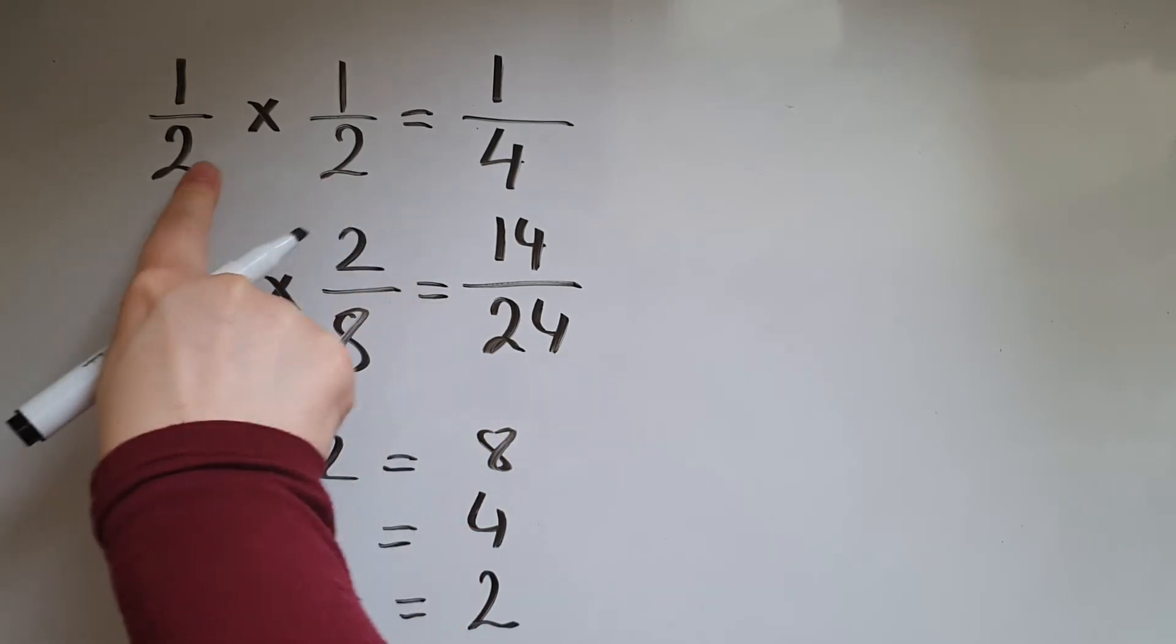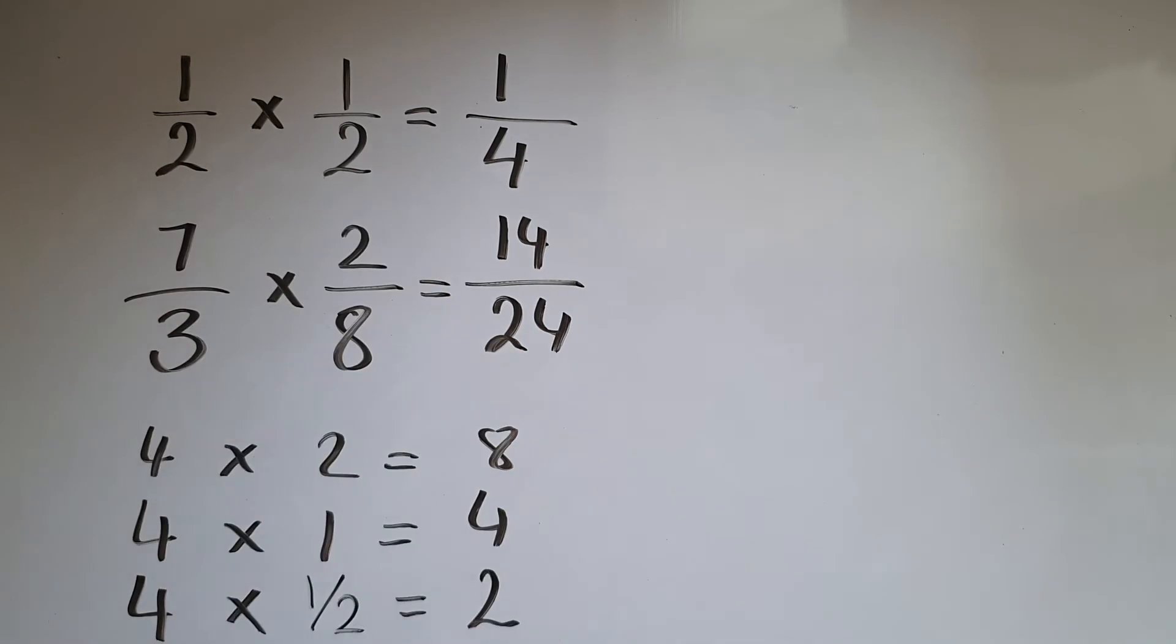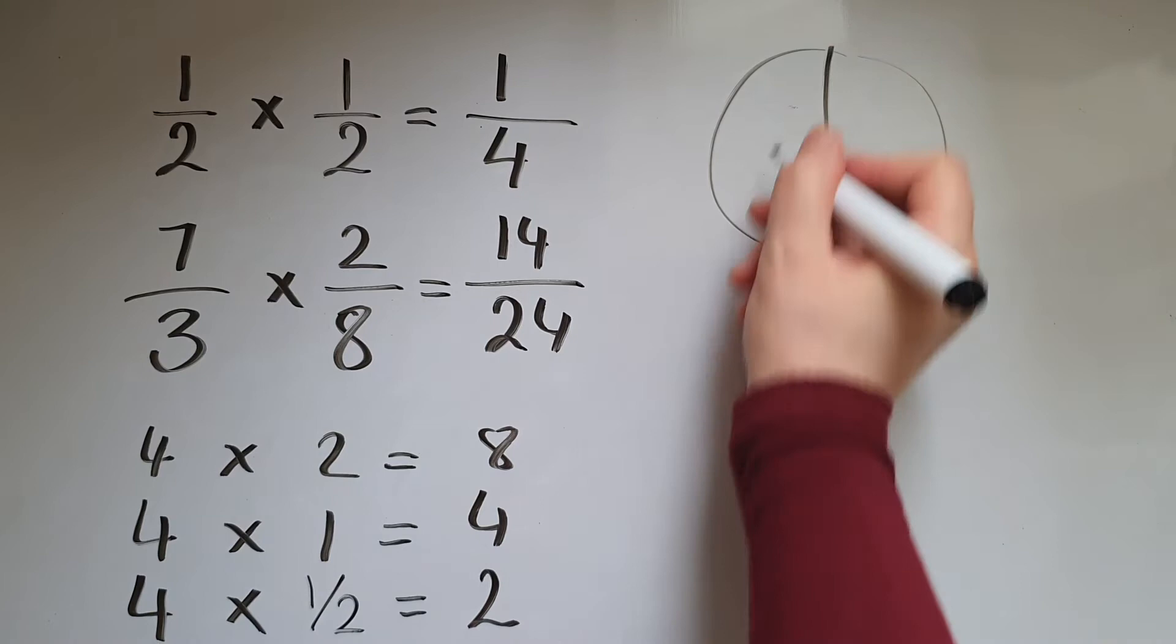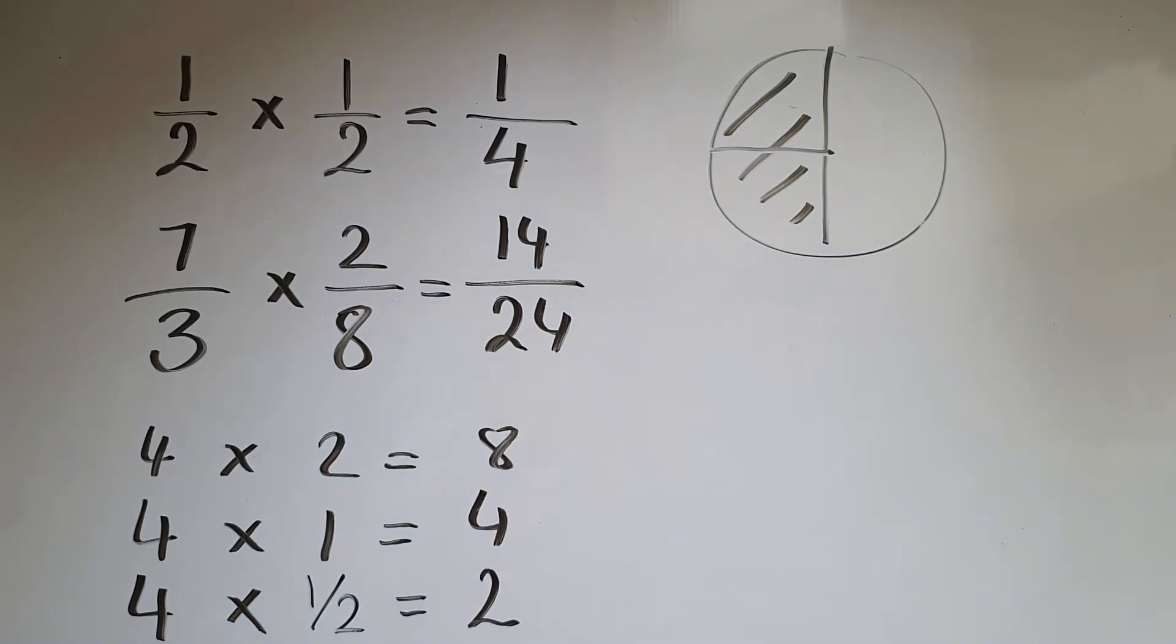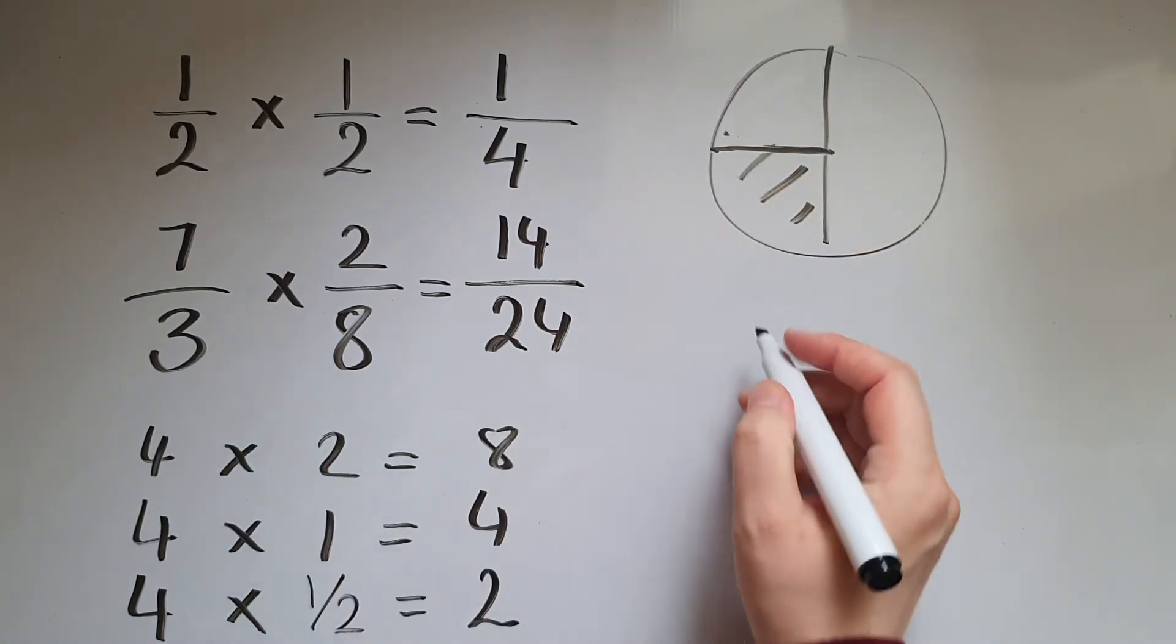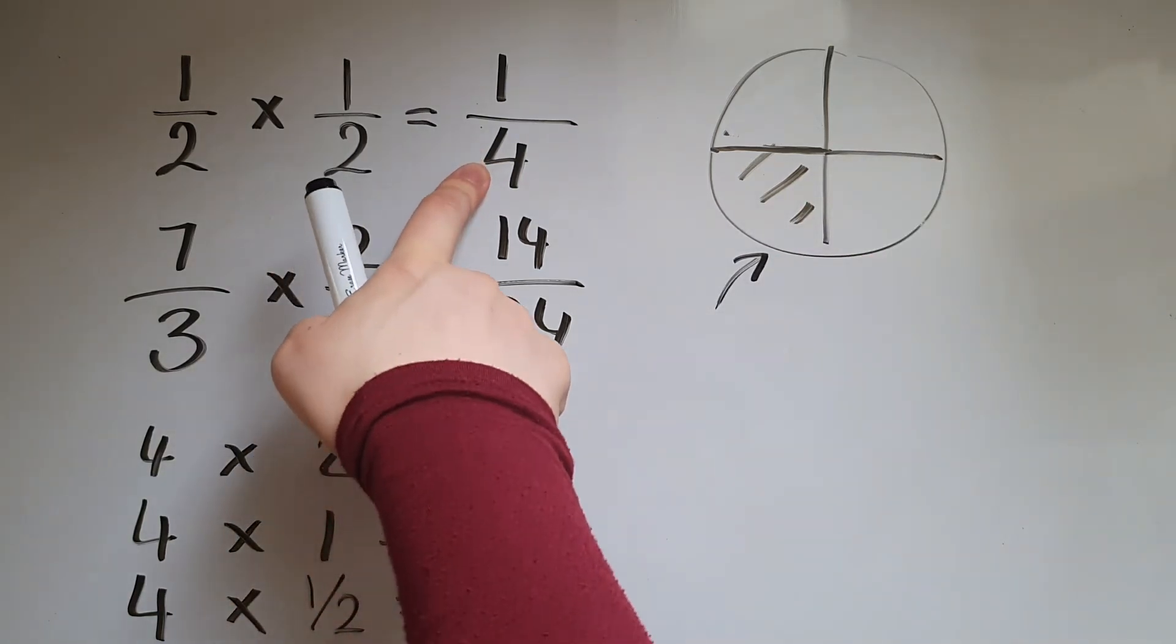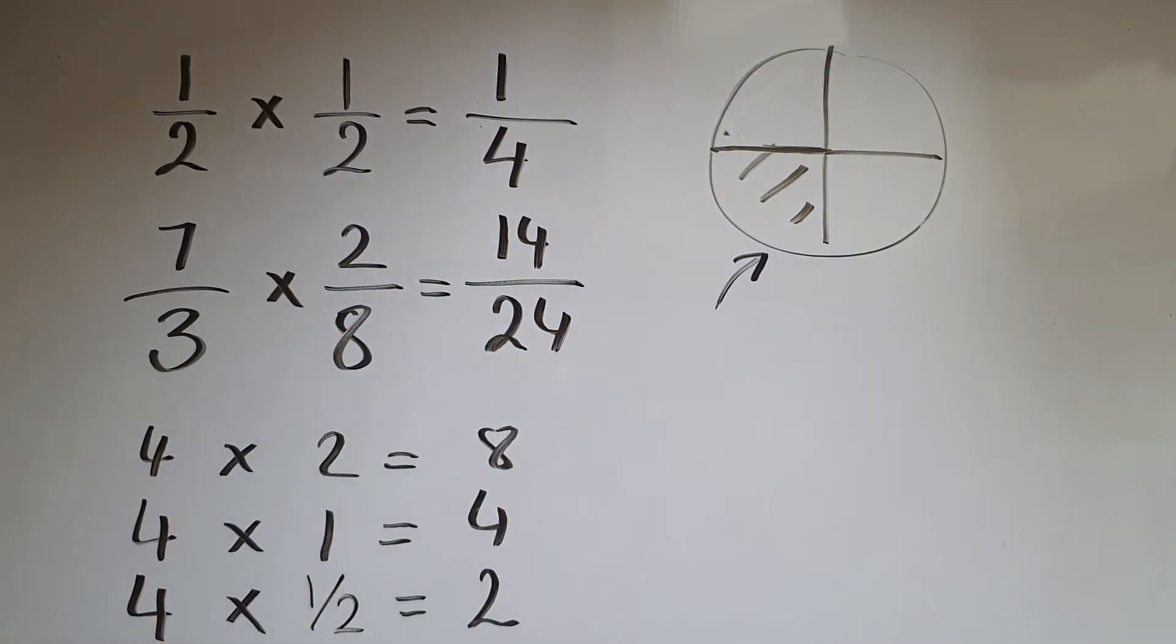In this particular case, half times half is the same as saying half of half. So if I represent half here, that would be half of the half. So that means only one of the parts. So that is a quarter, and that's what we have here as the answer.